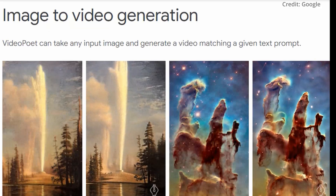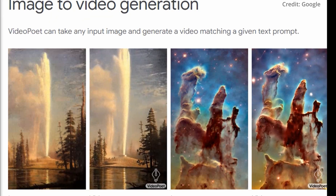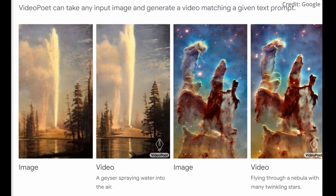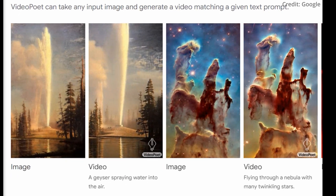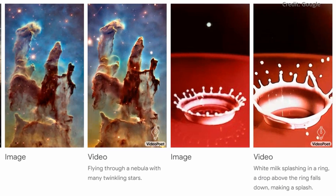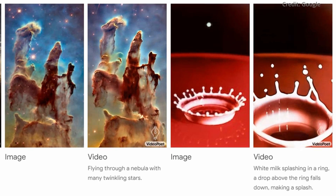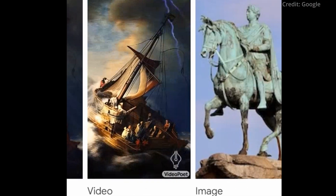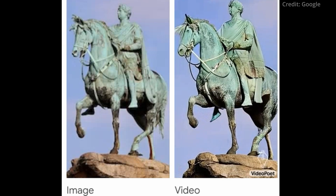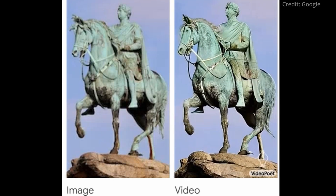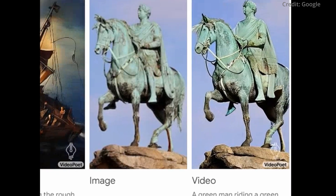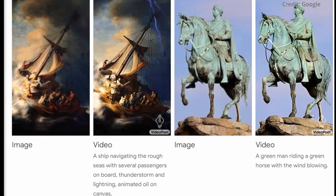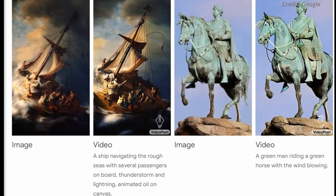Number two: image-to-video. VideoPoet can breathe life into static images by animating them to produce motion. This feature opens up new possibilities for storytelling and content creation, allowing users to transform still images into dynamic video sequences.